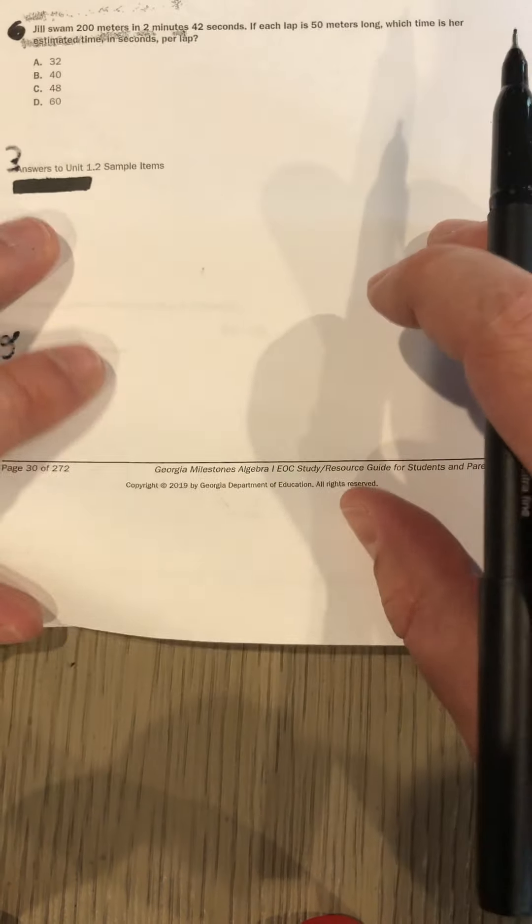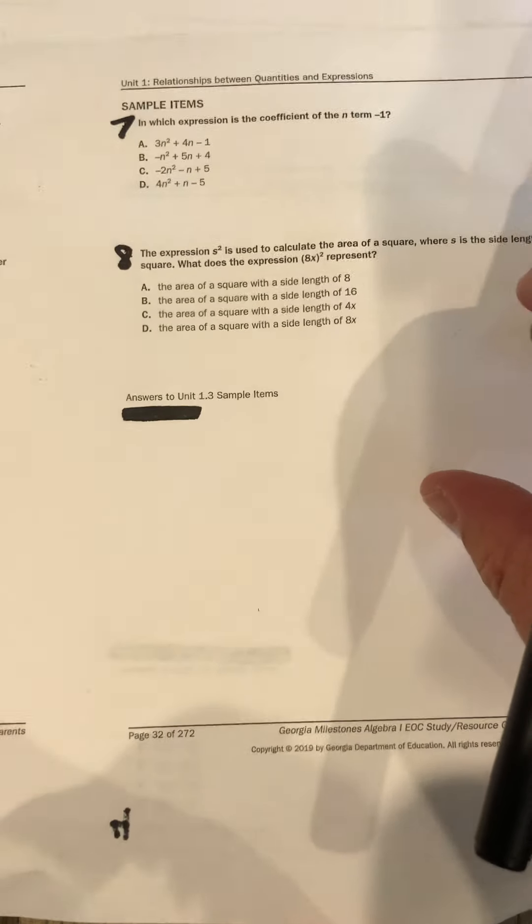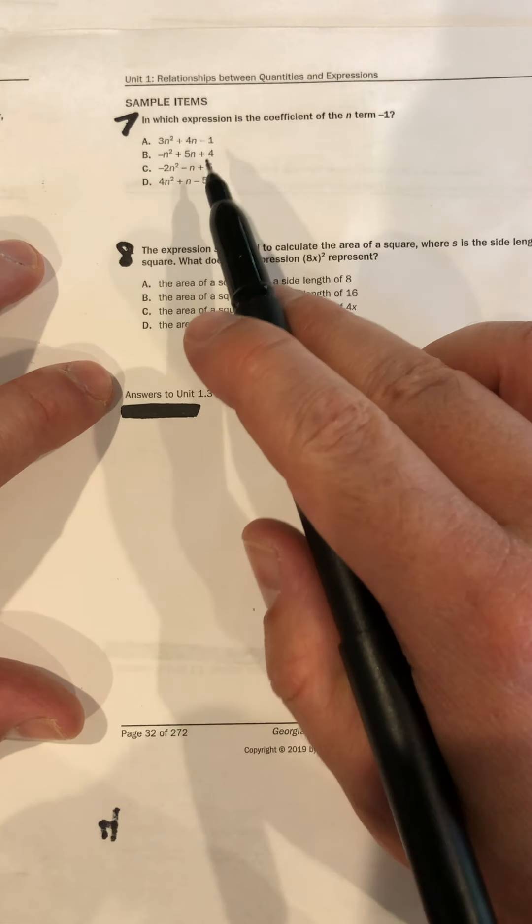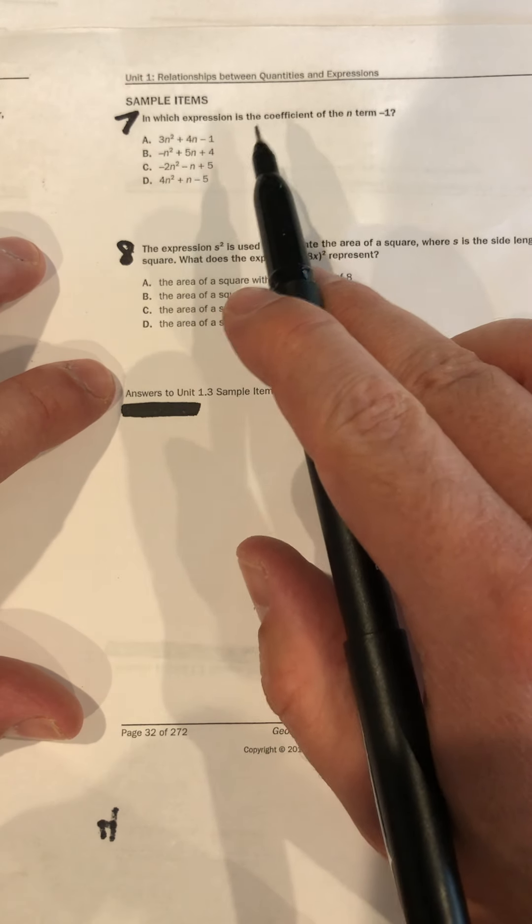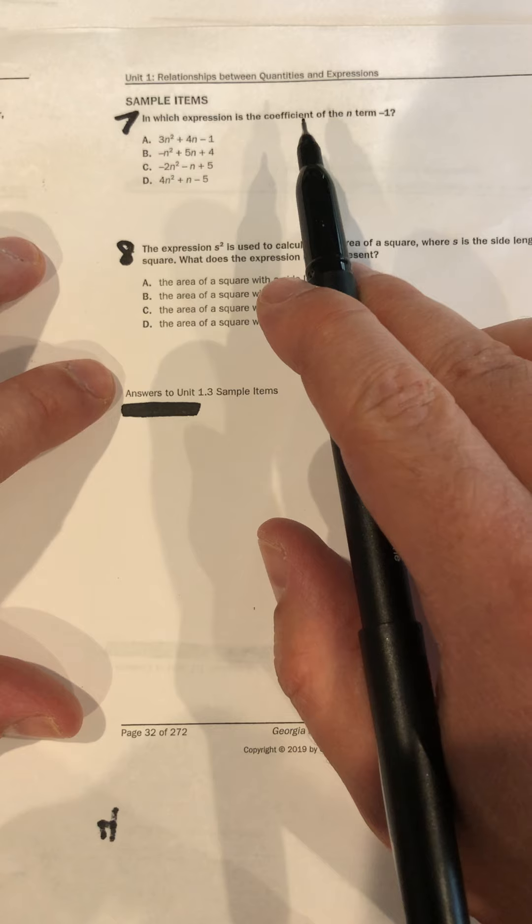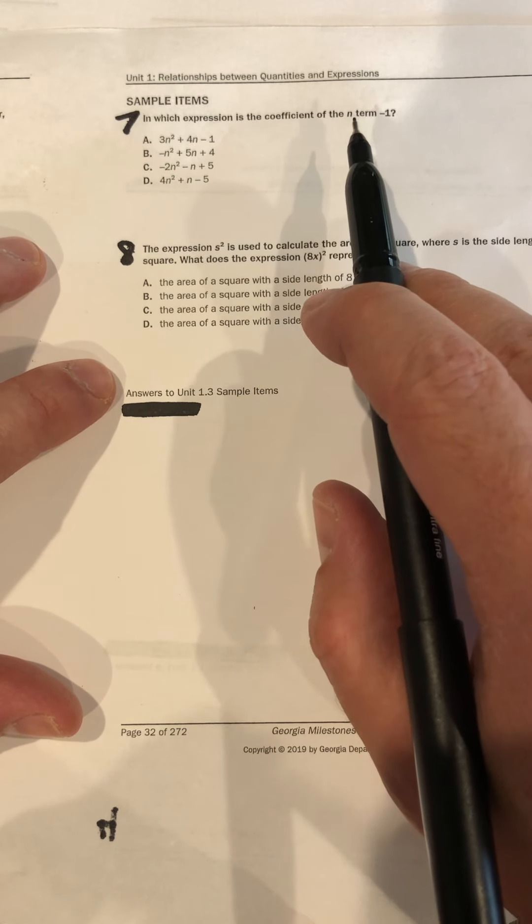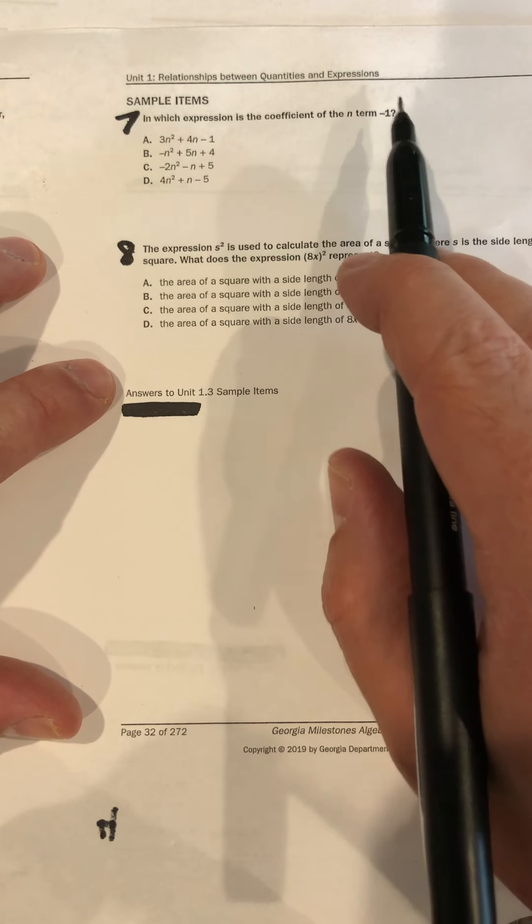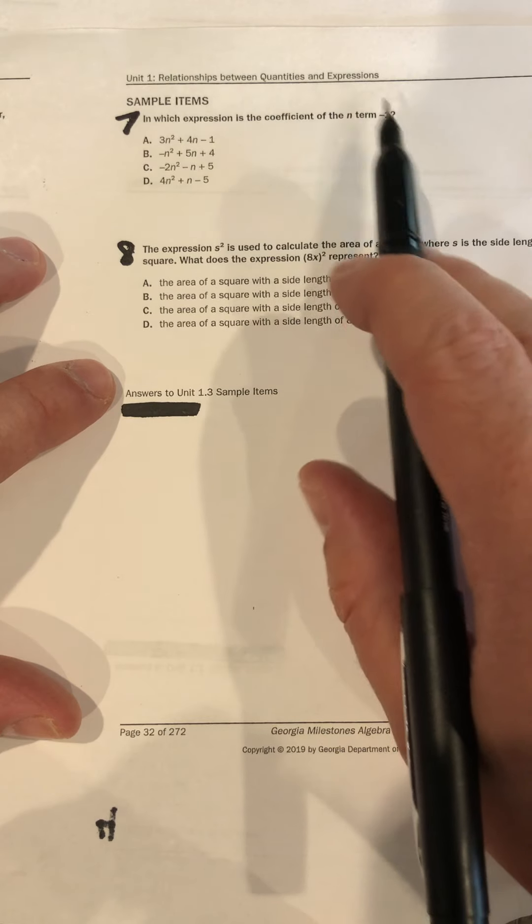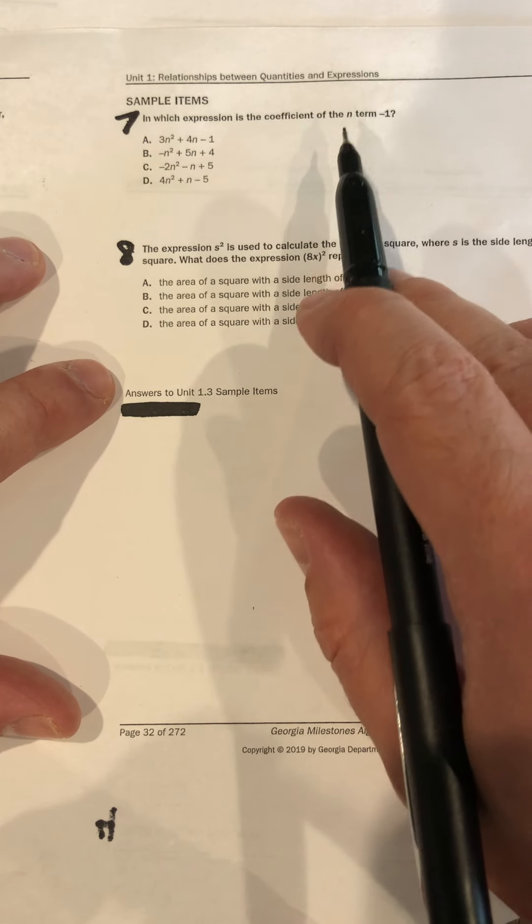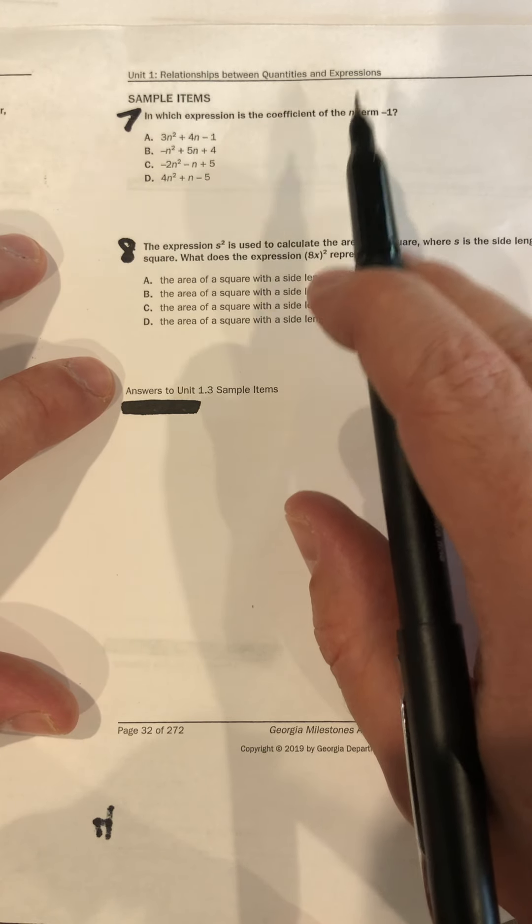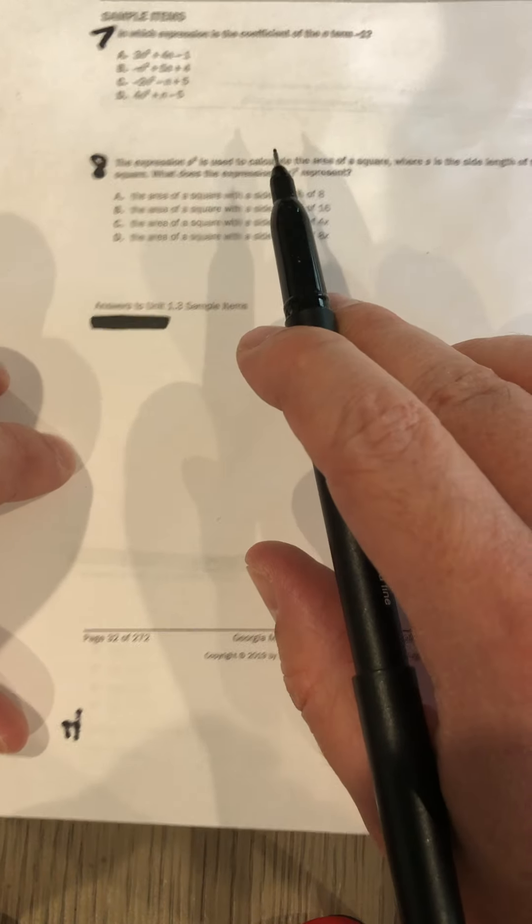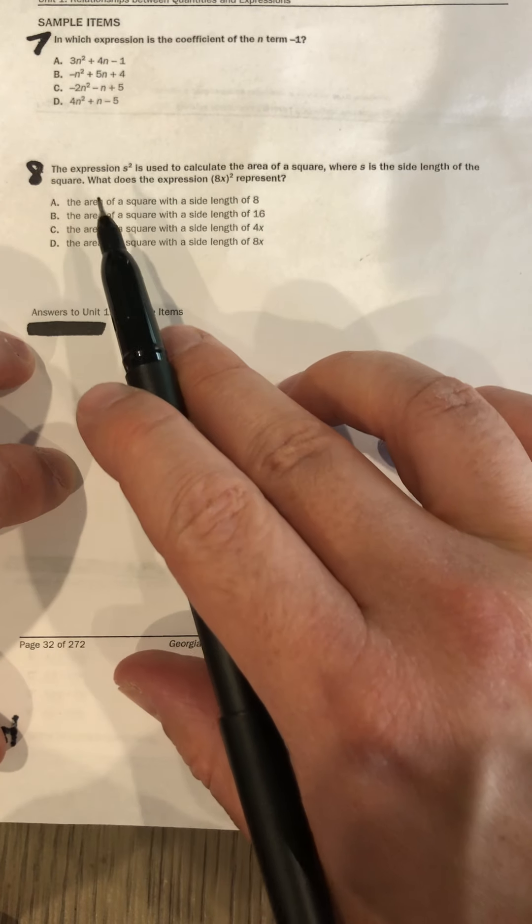Okay, that's not number seven. Okay, in which expression is the coefficient of the n term negative one? Okay, coefficient means the number in front of a variable. And the n term—a little bit of clarity here—not the n squared term, not the n squared term—the n term.